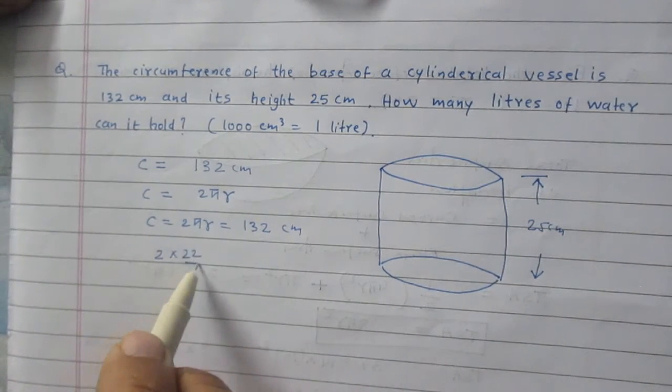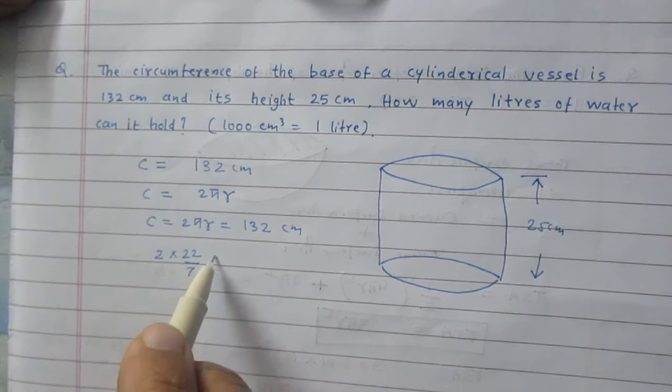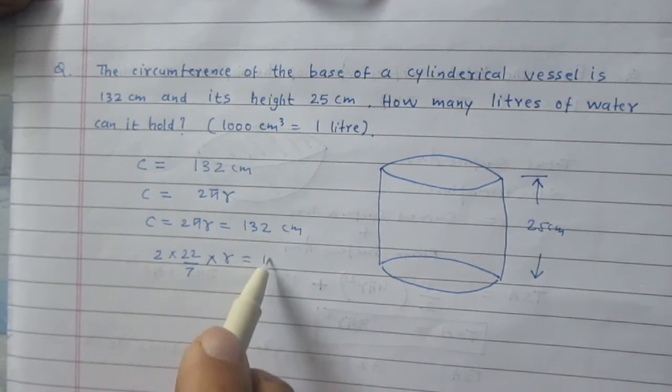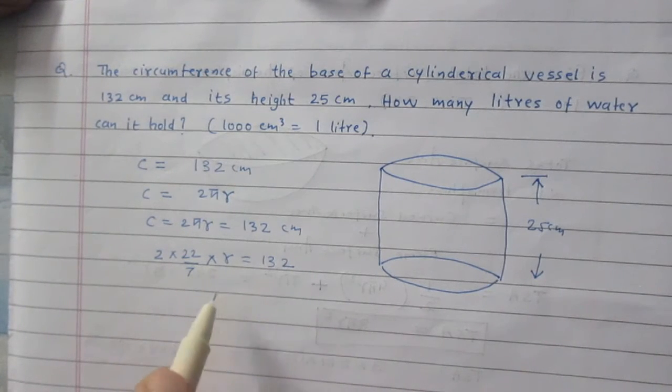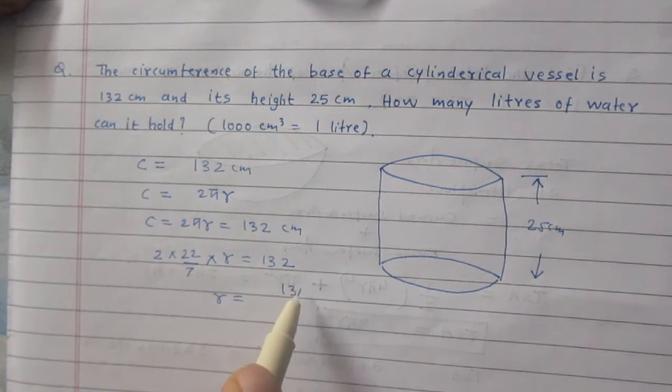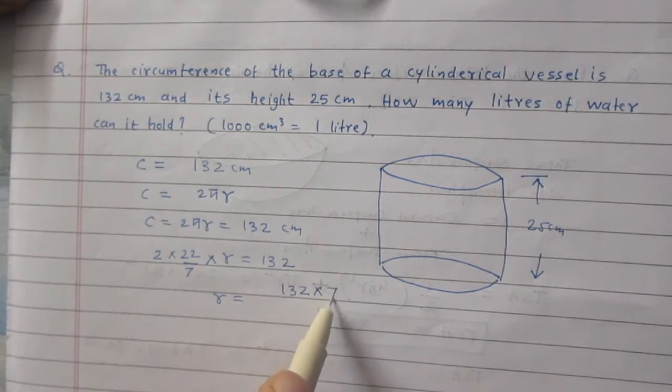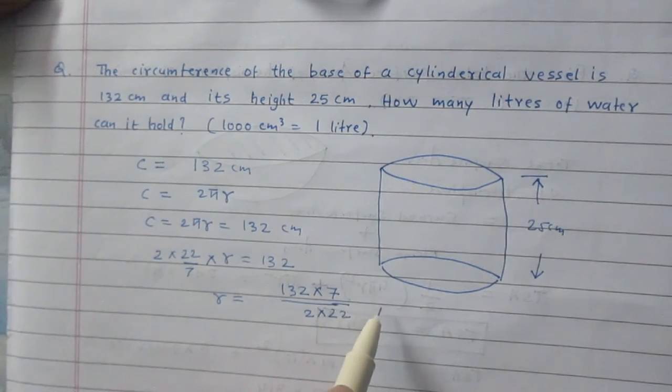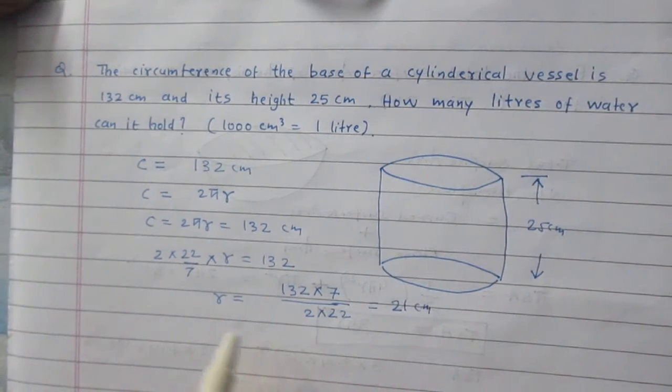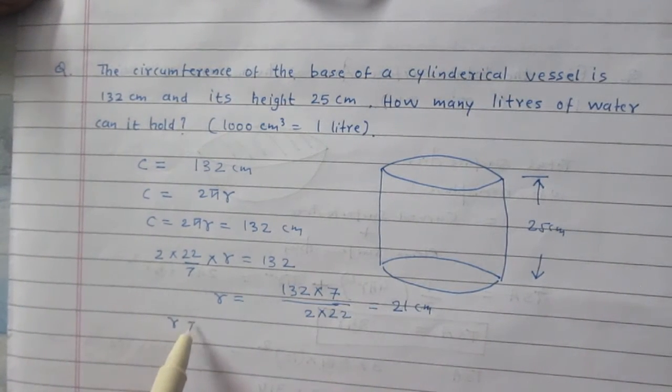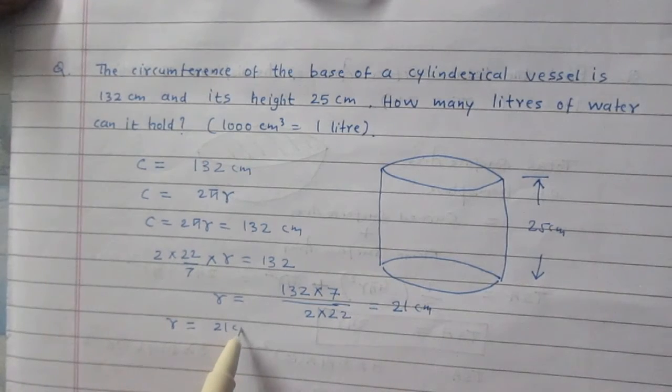It is 2 multiplied by 22/7 into r equals 132. On transposing the terms to the other side, we will get radius of the circle is 132 multiplied by 7 divided by 2 and 22. After calculation, you will find it is 21 cm. So radius of the base of the cylinder is 21 cm.